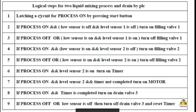Let us understand the logical steps for this process. First, we build a latching circuit to track whether the process is on or off using the start and stop push buttons. Next, we check: if the process is on and the low-level sensor is off and Level 1 sensor is off, then solenoid valve 1 should turn on. To turn off solenoid valve 1, the condition is: stop is pressed, or the low-level sensor is on and Level 1 sensor is on.